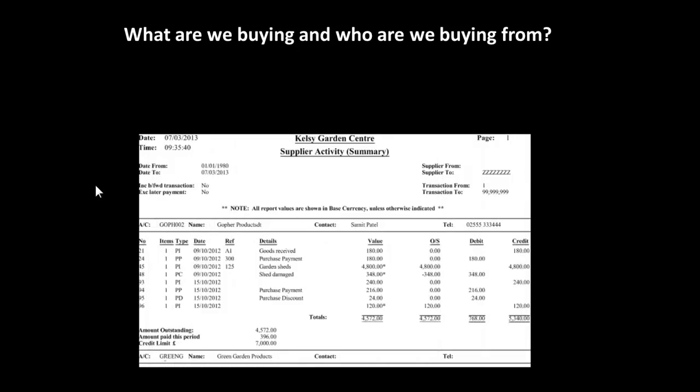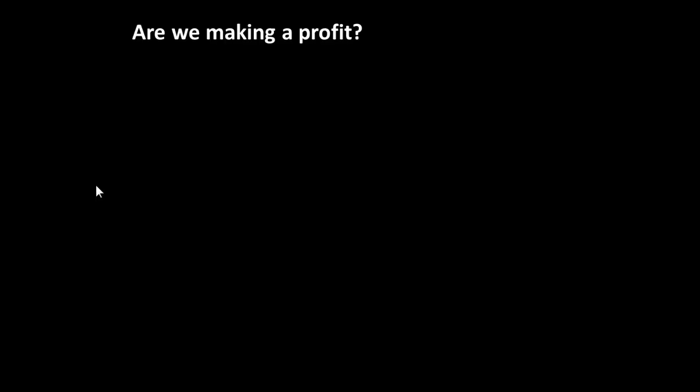What about the opposite — what are we buying and who are we buying it from? Well, that we can get from a supplier activity report. Remember, with computerized accounting software this becomes a fairly easy thing to do. It's much harder if you're trying to maintain daybooks, because you'd have to analyze daybooks separately.